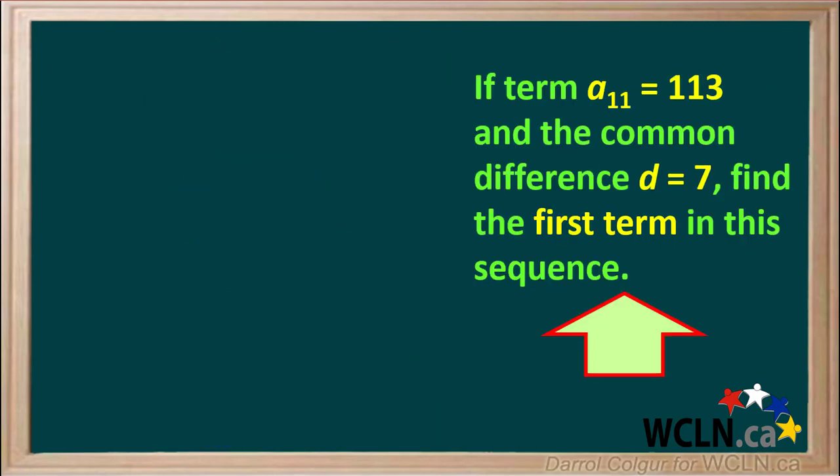Here's another type of question involving sequences. We're given that the value of term a11 in an arithmetic sequence is 113 and the common difference is 7, and we're asked to find the value for the first term in this sequence.